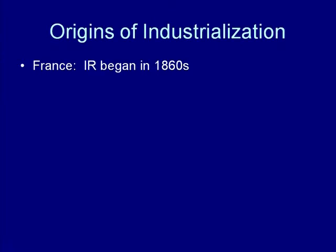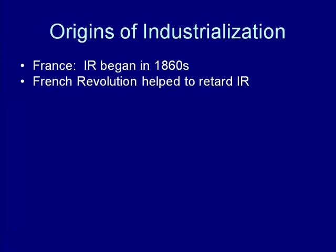In France, the Industrial Revolution began in the 1860s — a good 70 to 80 years after England. There are several reasons for this. Number one, the French Revolution really helped to retard industrial growth, because the Jacobins gave quite a bit of land to the peasants in exchange for their support of the revolution. So if peasants owned their own little plot of land, they weren't going to be available to work full-time in a factory or give up agricultural production. Cheap labor was in short supply in France because if you had your own land, why work in a factory?